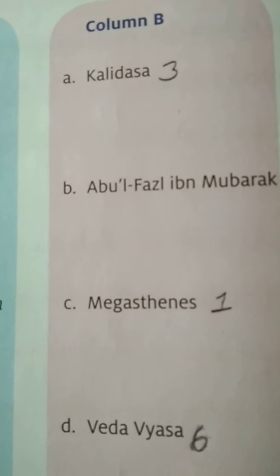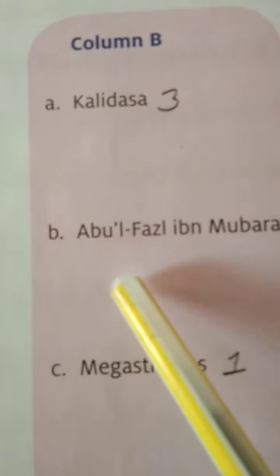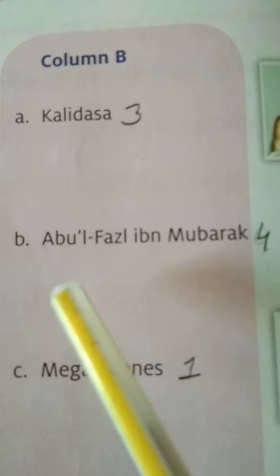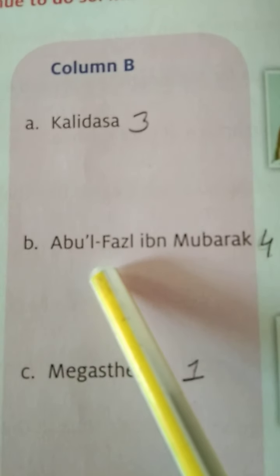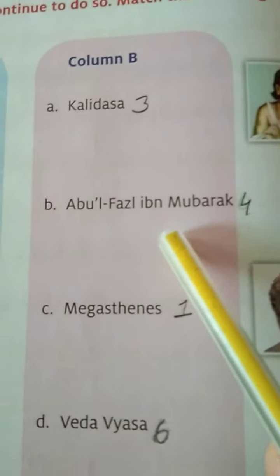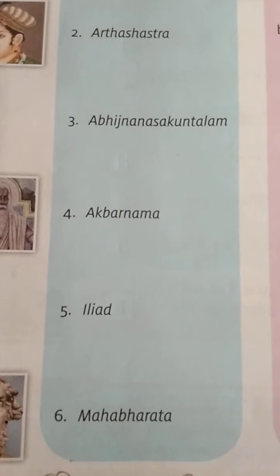Number four is Akbarnama. Akbarnama is written by Abu al-Fazal ibn Mubarak. The name may look complex in writing, but it is pronounced Abu al-Fazal ibn Mubarak — that is the name of the author.